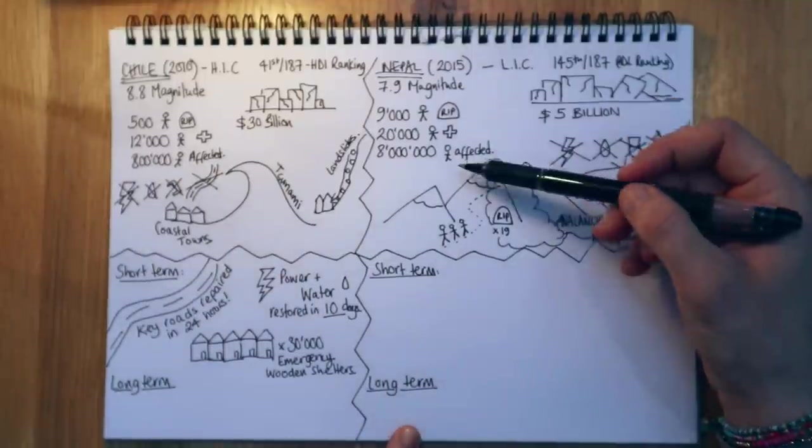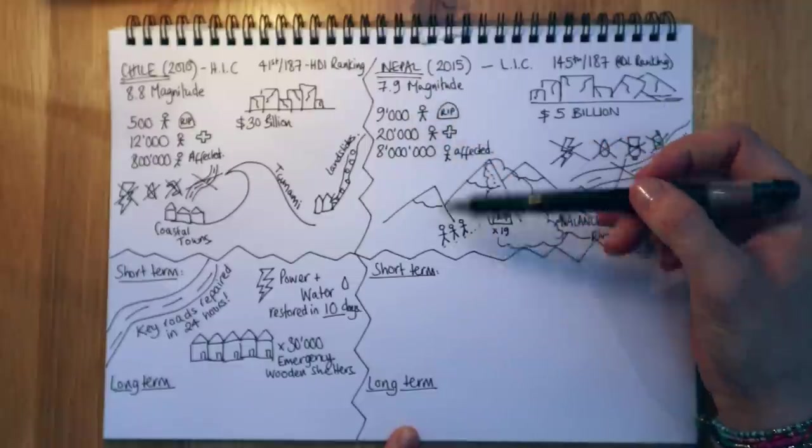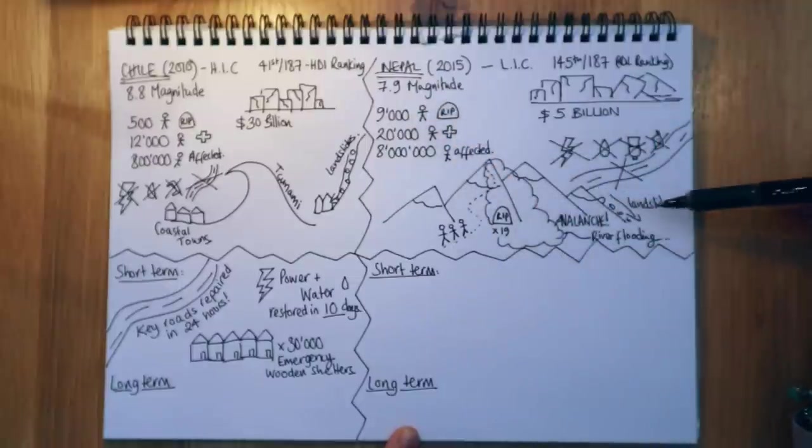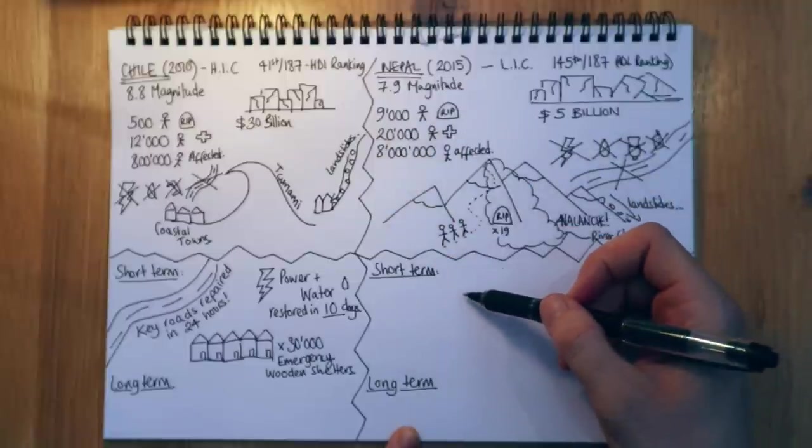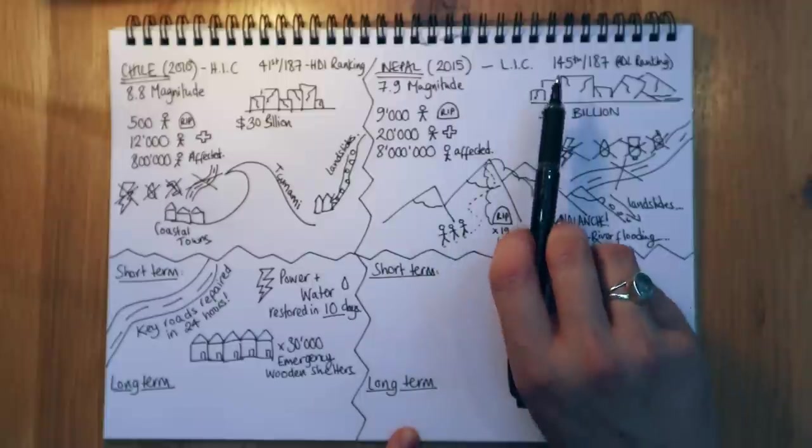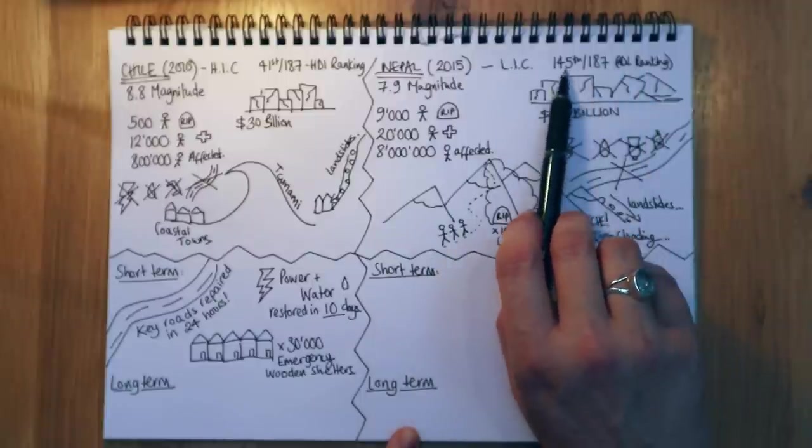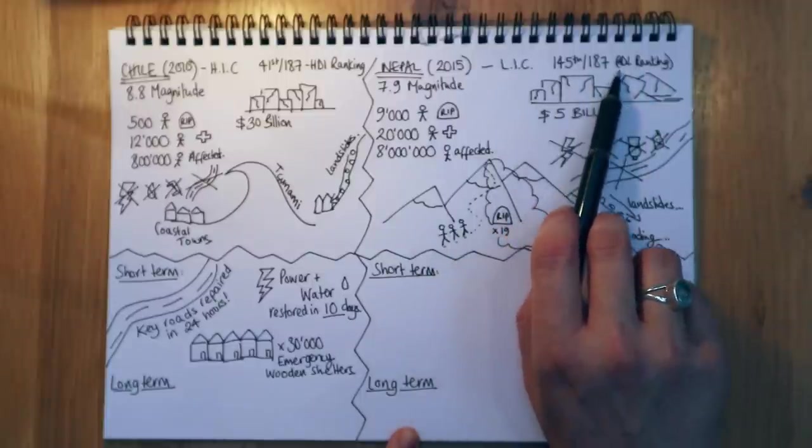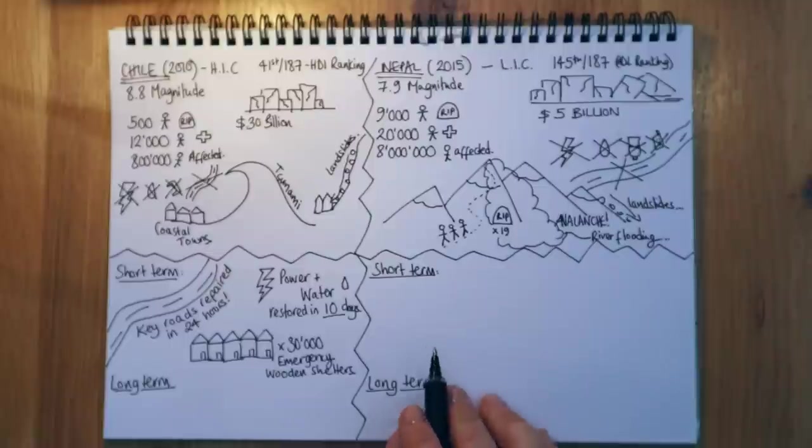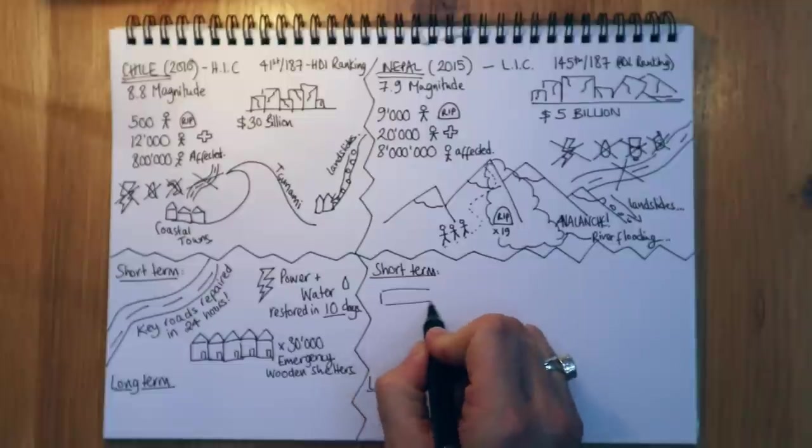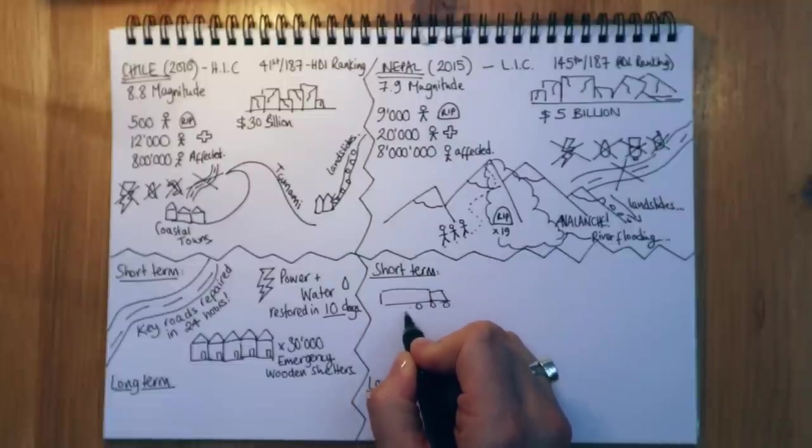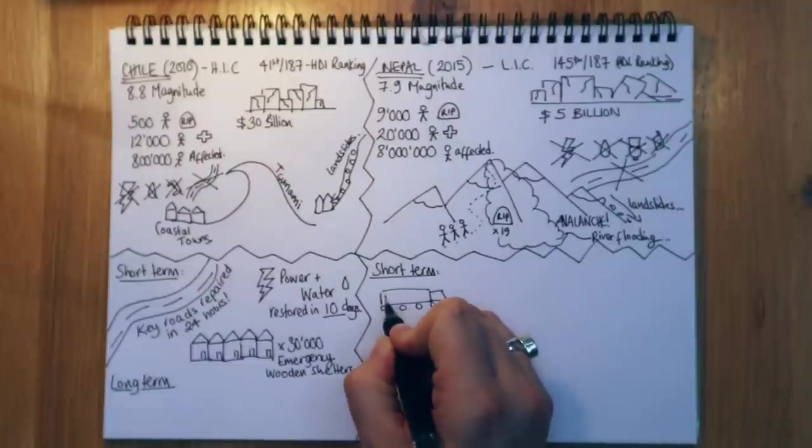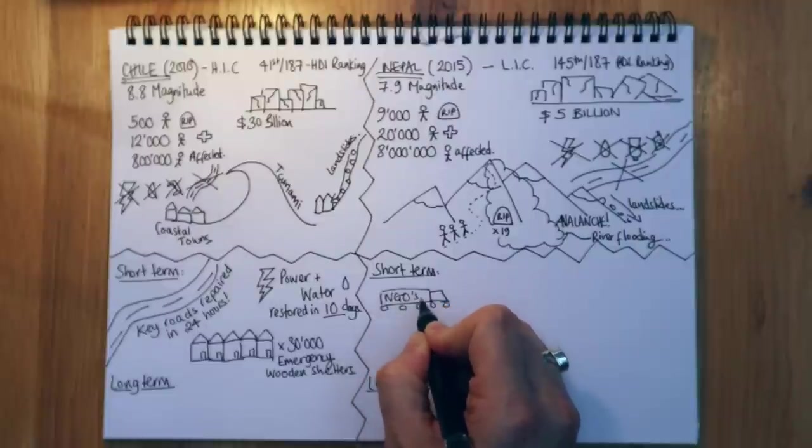Now if we go over to Nepal and we look at the 7.9 magnitude earthquake, and we think about all those things that have happened - the avalanches, the river flooding, the landslides, the buildings destroyed, and all those many, many people affected. What did they do? Now they're not the wealthiest country. They're quite low in terms of their human development index ranking. So they couldn't really help themselves a great deal. Instead, they put out a plea. And the plea was to NGOs to come in and help them.